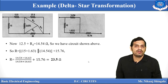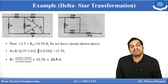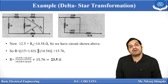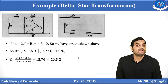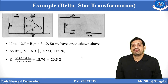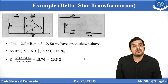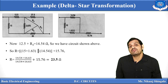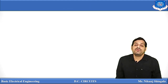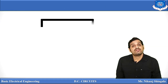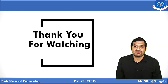In the given network, we first converted one delta into a star, then after that conversion, another delta appeared, which we converted into a star again. The final equivalent resistance between the two terminals is 23.5 ohm. In this video lecture I discussed nodal analysis, steps for nodal analysis, one example based on nodal analysis, and one example based on delta-star transformation. Hope you enjoyed the video — see you in the next DC circuit lecture. Thank you for watching.